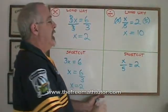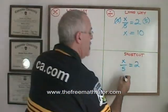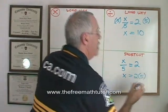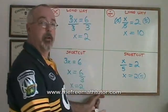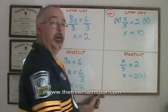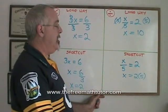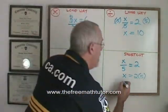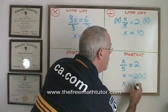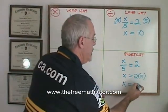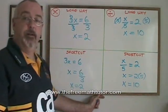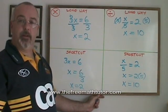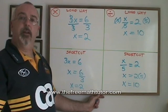With the shortcut, I show that I am multiplying the right side by a 5, but I don't bother showing that I'm multiplying the left side by a 5. I still am multiplying both sides by 5. x is equal to 2 times 5, which is 10 — the correct answer and the same answer. This is how we use our basic algebra shortcut for multiplication and division.